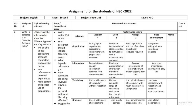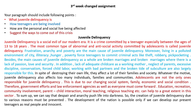The points to include are: What is juvenile delinquency? How are teenagers being involved? How are personal and social life being affected? And the third point suggests the ways to come out of this crisis.